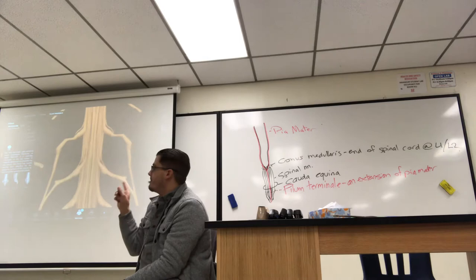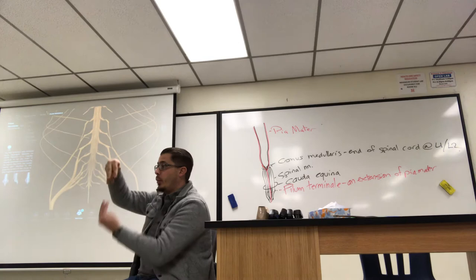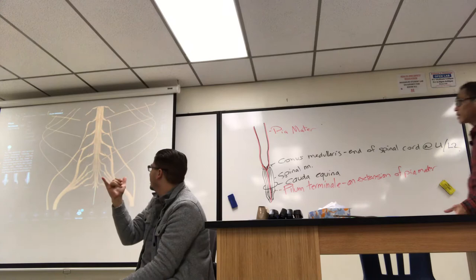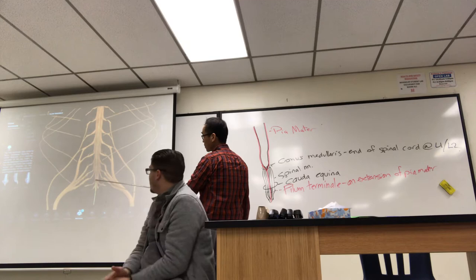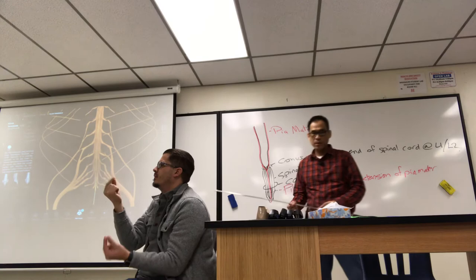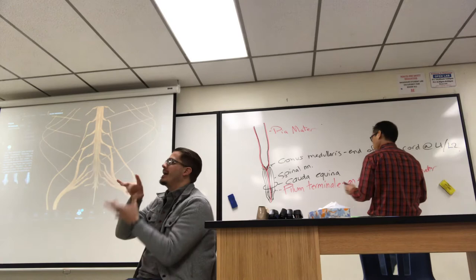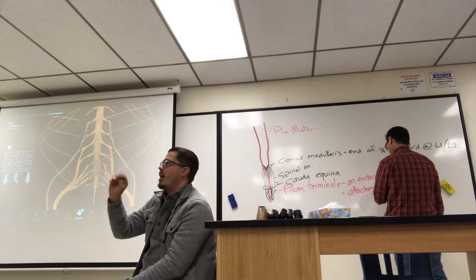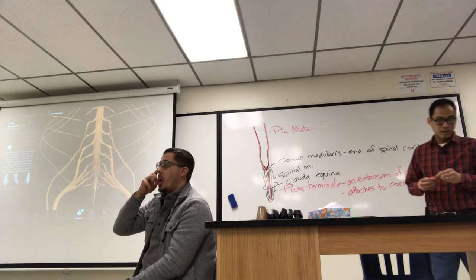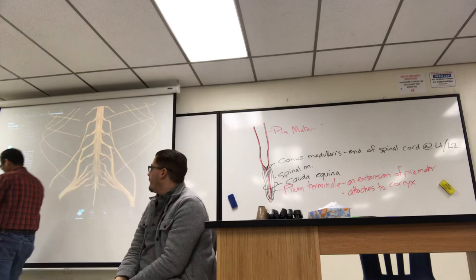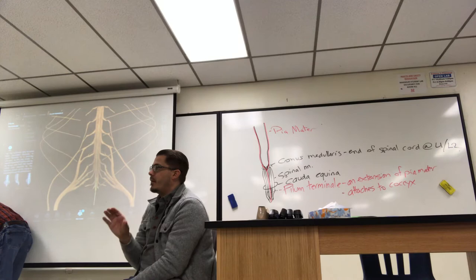The filum terminale is the little thread highlighted within the cauda equina. It projects all the way down the middle and anchors to the coccyx to hold the spinal cord in place so it is not slack within the vertebral canal.